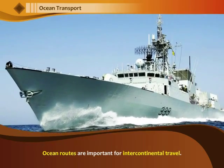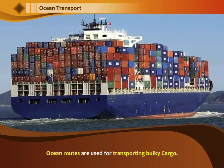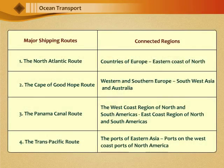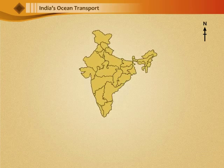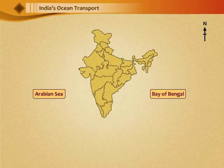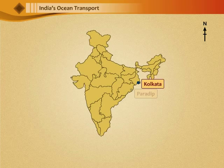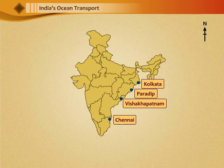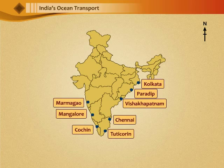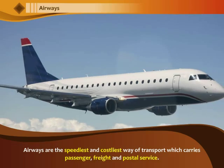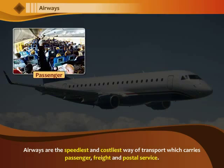Ocean routes are important for intercontinental travel and are used for transporting bulky cargo. The major shipping routes of the world include: 1. The North Atlantic Route, 2. The Cape of Good Hope Route, 3. The Panama Canal Route, and 4. The Trans-Pacific Route. India's ocean transport is surrounded by the Bay of Bengal in the east, the Arabian Sea in the west, and the Indian Ocean in the south. Major ports include Kolkata, Paradeep, Vishakapatnam, Chennai, Tutikoran, Cochin, Mangalore, Maramagao, Mumbai and Kandla.